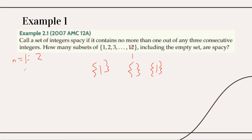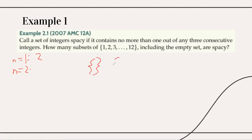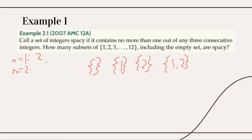That didn't really help us solve the original problem, so let's try n=2. For n=2, we have the empty subset, or we can have 1 in our set, or we can have 2 in our set. Note that we cannot have both 1 and 2 because that is not spacy — it contains two consecutive numbers, meaning two out of three consecutive integers. So for n=2, the answer is 3.